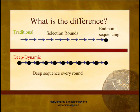What is the difference between traditional sequencing and next-generation sequencing when applied to aptamer discovery? The difference is not just more sequences. With traditional aptamer discovery, selection proceeds until a certain point, and then, after the last round, the library is cloned and representatives are sequenced.